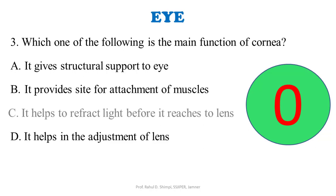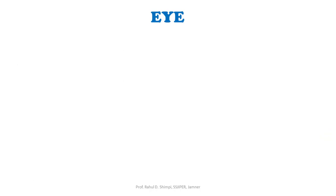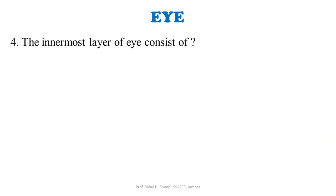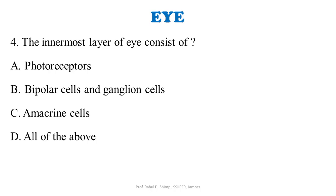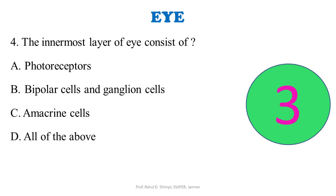The innermost layer of the eye, which is the retina, consists of: A: photoreceptors. B: bipolar cells and ganglion cells. C: amacrine cells. D: all of the above. The correct answer is all of the above — options A, B, and C are all correct.